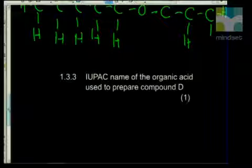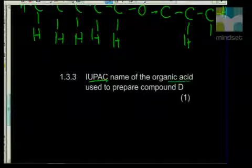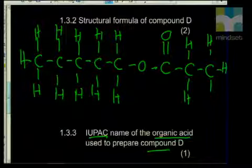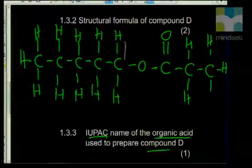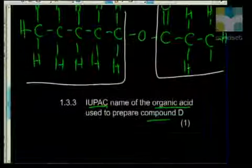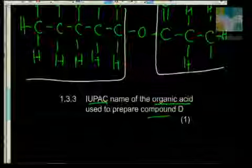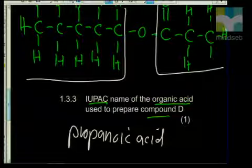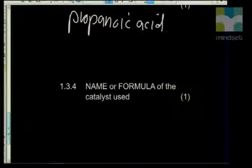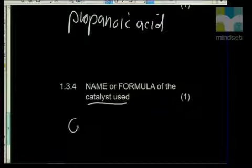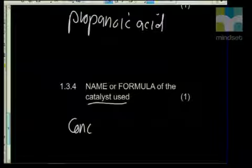Give the IUPAC name of the organic acid used to prepare the compound. The acid part is after the carbonyl group — three carbons — so that's propanoic acid. The formula or name of the catalyst used is concentrated sulfuric acid: conc. H2SO4.